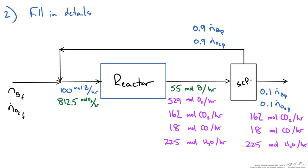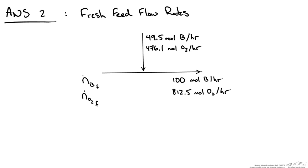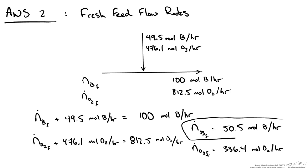The second part of the question asks for the feed flow rates entering the process. Since we know the product stream amounts, we can fill in the molar flow rates of butane and oxygen in the waste stream and recycle stream. Performing a material balance on the mixing point, we have two unknowns — fresh feed flow rates of butane and oxygen — and two species balances. Fresh feed plus recycle must equal total flow to the reactor. Solving gives 50.5 moles of butane per hour as the fresh butane feed, and similarly we solve for the fresh oxygen feed.